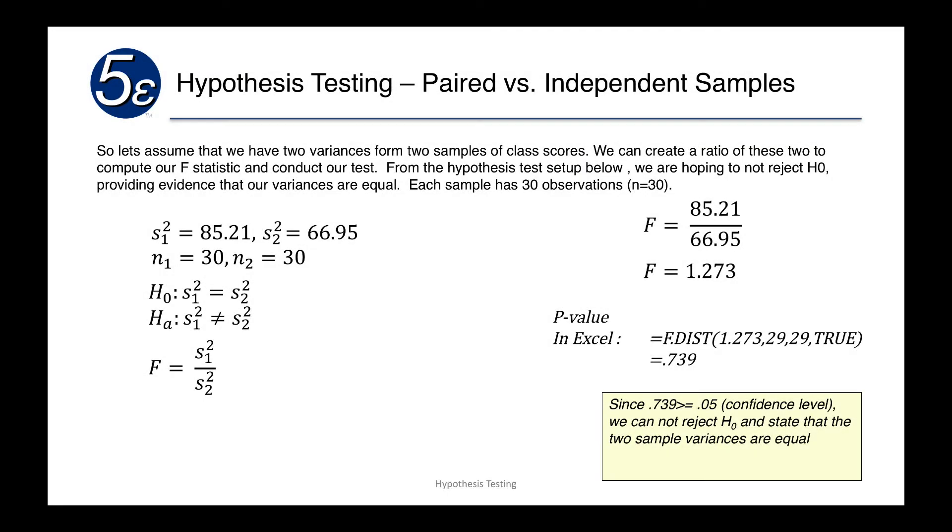So here's an example. Let's assume that we have two variances from two sample scores. We can create a ratio of the two to compute our F-statistic and then conduct our test. We have our variance from sample one is 85.21, and our variance from sample two is 66.95. Both sets of observations are 30.